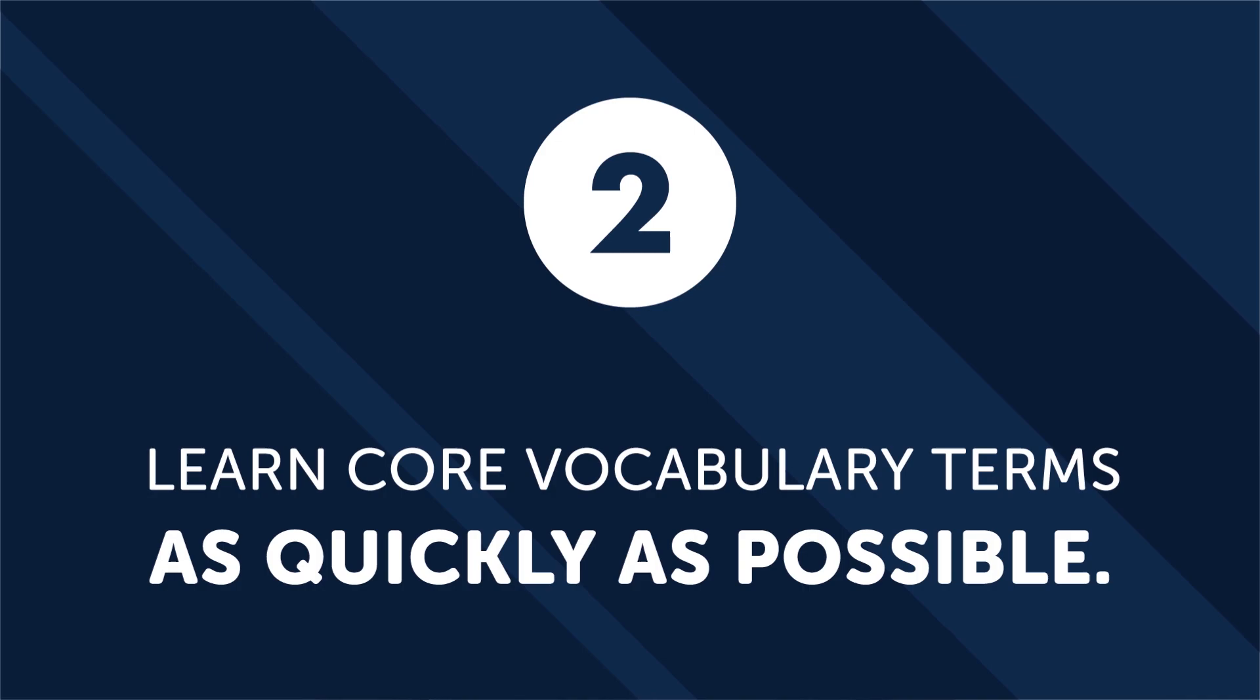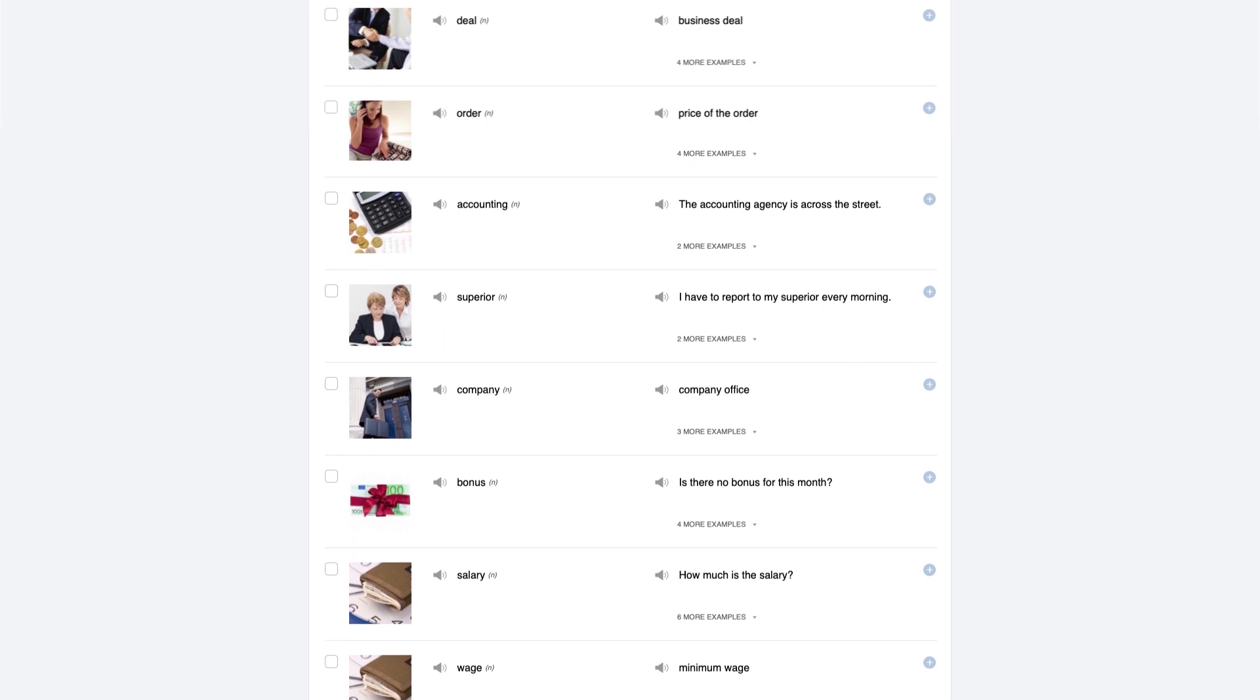Second, learn core vocabulary terms as quickly as possible. You don't need to memorize thousands of words to learn conversational language. In fact, with just a couple hundred words, you could have a very basic conversation. And by learning maybe 1,000 to 2,000 words, you could carry a conversation with a native speaker about current events, order in restaurants, and even get directions. To help you get started with this, check out our 2,000 common words, also known as our core list. These 2,000 words are all you need to learn to speak fluently and carry a conversation with a native speaker.